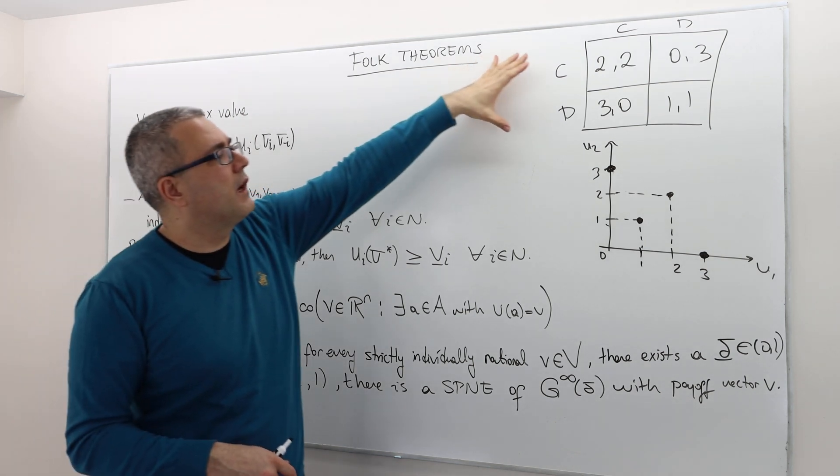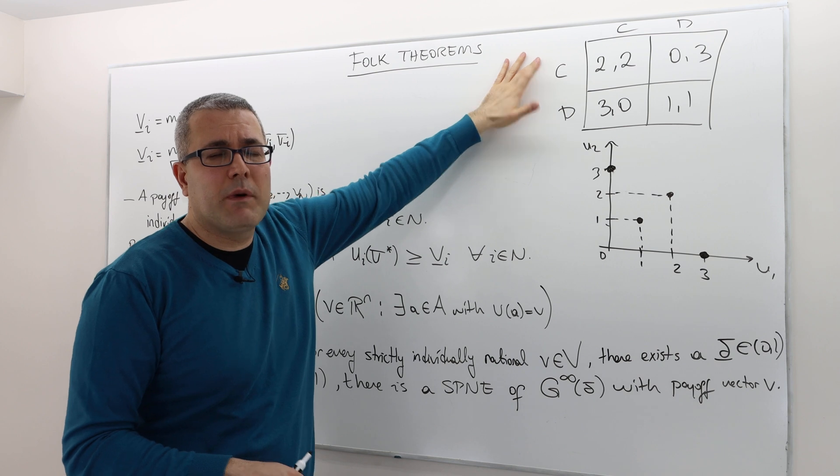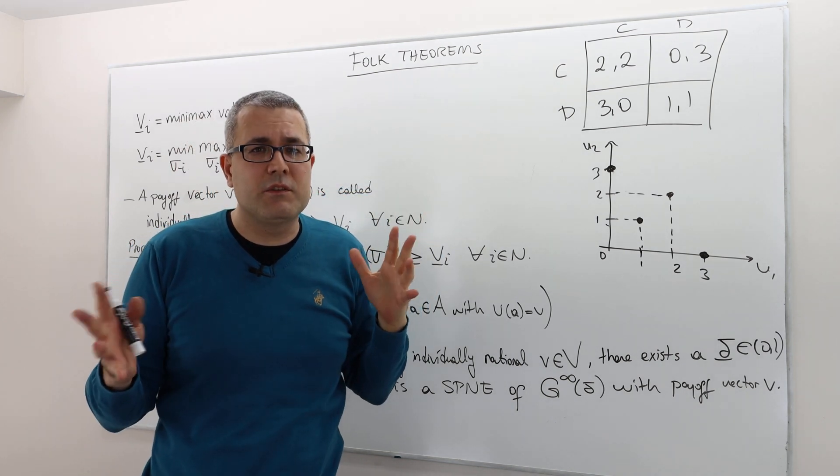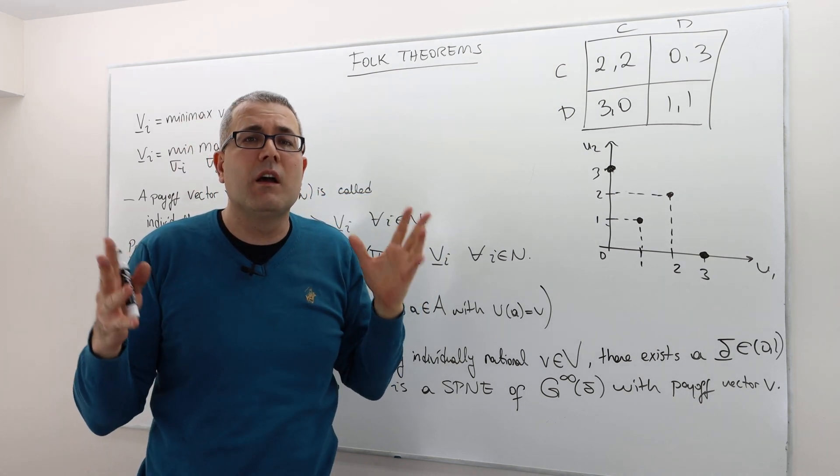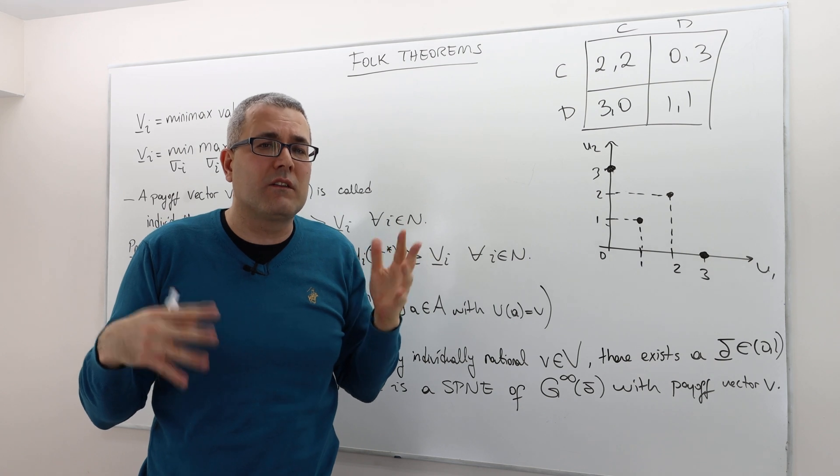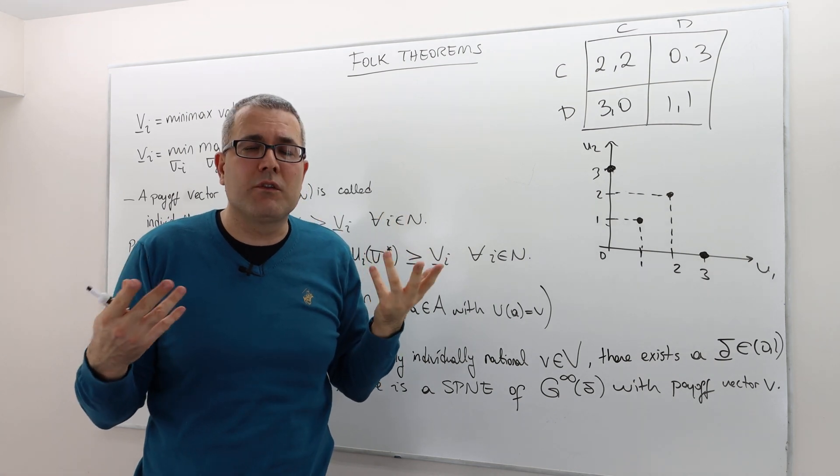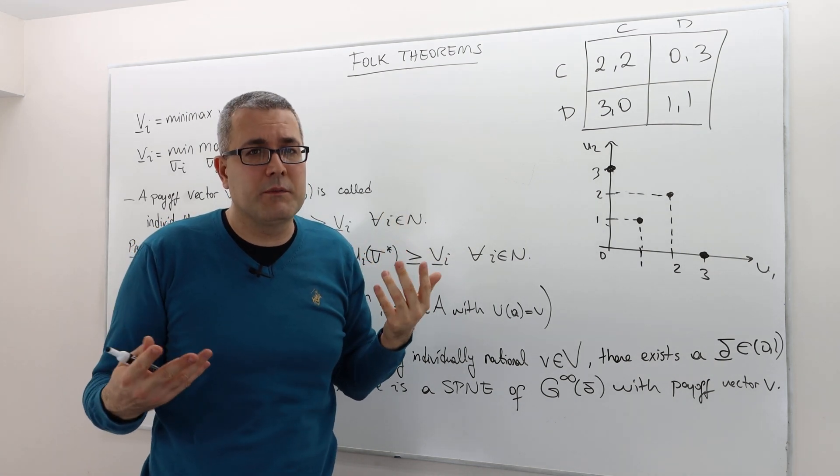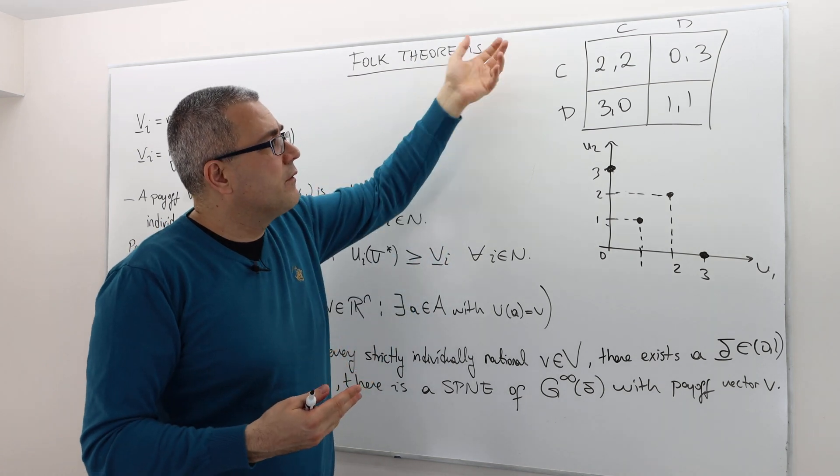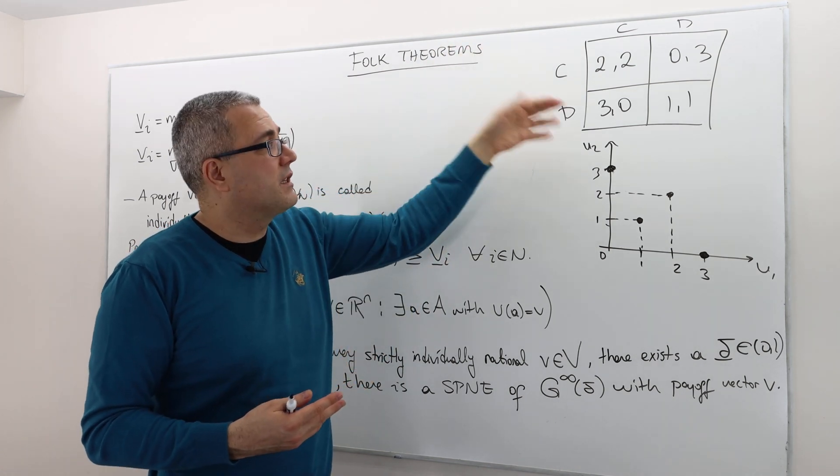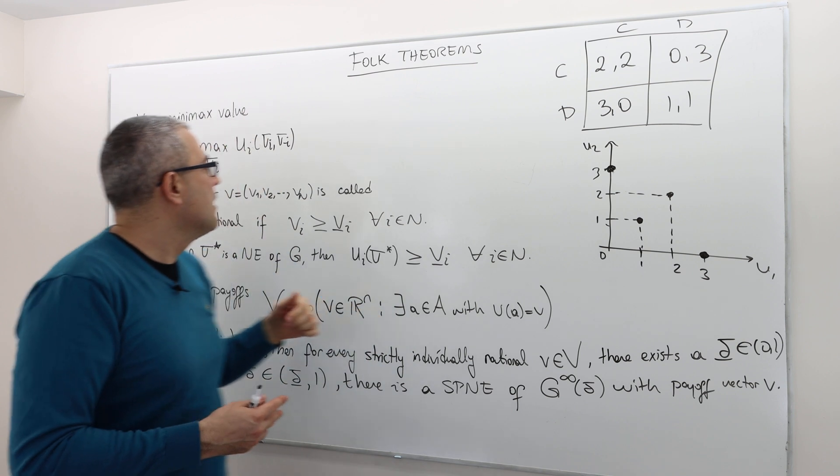So for example, if we are talking about the Prisoner's Dilemma, again, min-max, max-min values can be defined for any games. But the thing is, they're not sort of meaningful solution concepts for all games. So the min-max value for Prisoner's Dilemma game is, for example, one for each player.